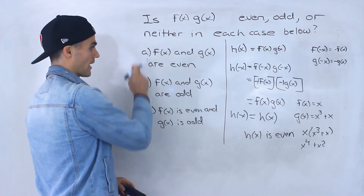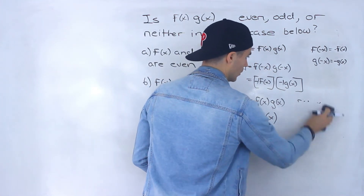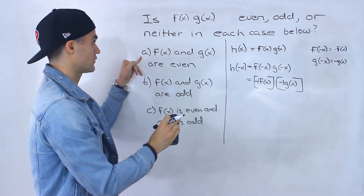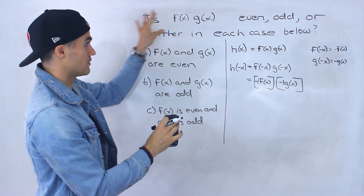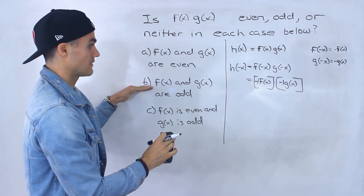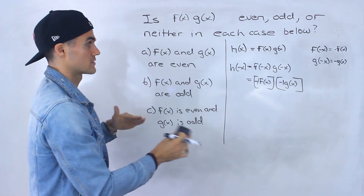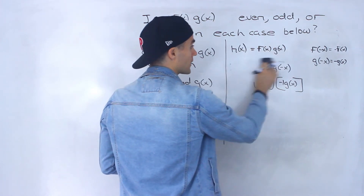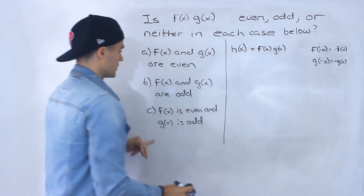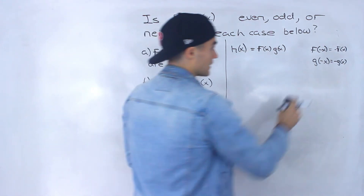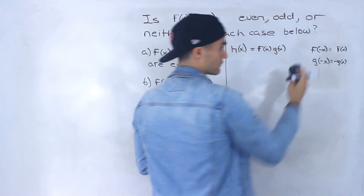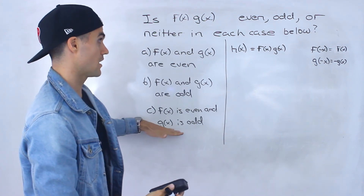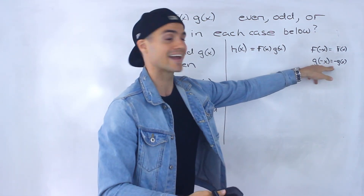So the answer for a and b is both even, which is different from the previous example. When we were adding, the first case was even and the second was odd. Take note of the difference between adding and multiplying. Now moving to part c — f(x) is even, so f(-x) = f(x), and g(x) is odd, so g(-x) = -g(x).